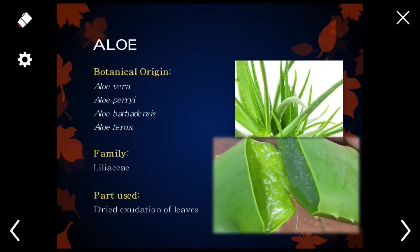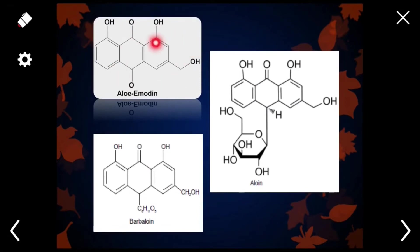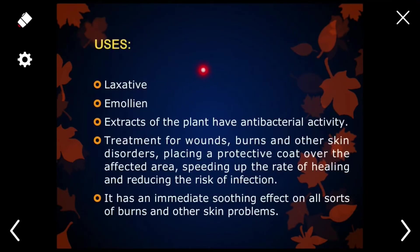The first example of anthraquinone glycosides is aloe. The botanical names are Aloe vera, Aloe perryi, Aloe barbadensis, and Aloe ferox; family Liliaceae; part used: dried exudate of the leaves. The main constituents present in aloe are barbaloin, beta-barbaloin, isobarbaloin, resins, and aloe-emodin. Here you can see the structures of these compounds present in aloe. This is the glycoside aloe, while these are the aglycone aloe-emodin, and this is also a glycoside called barbaloin. Aloe is used as a laxative, as an emollient, and it also has antibacterial activity; it is also used for wounds, burns, and other skin disorders.